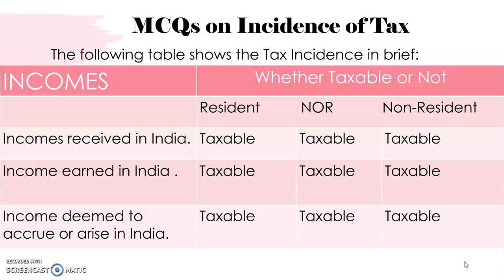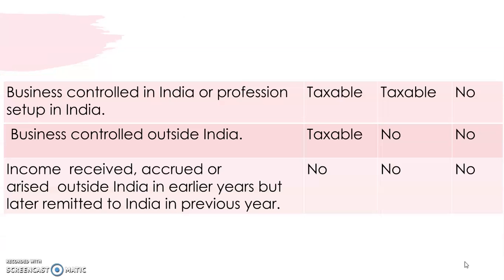The third point is income deemed to accrue or arise in India. 'Deemed to accrue' means the income has actually not accrued or arisen in India, but it is deemed to accrue or arise in India under the Income Tax Act 1961. In such a situation also, you are going to tax it for all three cases. Next, if the business is controlled in India or the assessee's profession is set up in India, it is taxable for two cases — resident and not ordinarily resident — but not for non-resident.